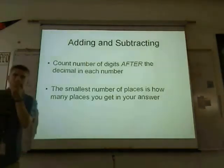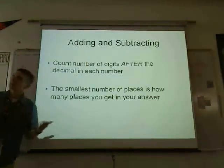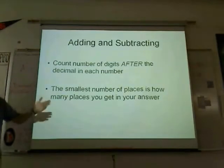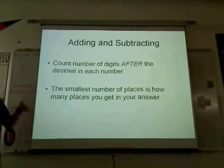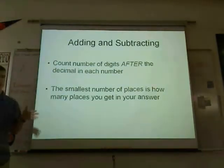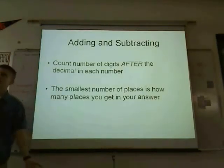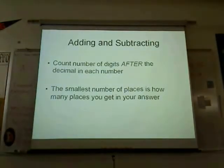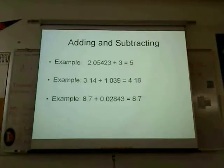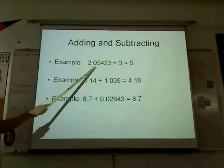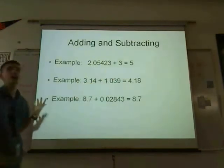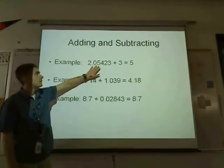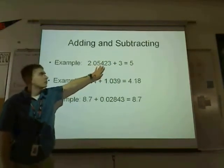Adding and subtracting: when adding and subtracting, you count the numbers after the decimal point. Whichever of your numbers has the least numbers after the decimal point is the number of decimal places you get in your answer. For example, 2.05423 plus 3 equals 5, because here you have 5 digits after the decimal and here you have 0.